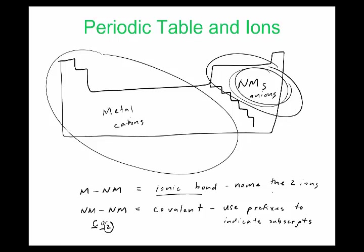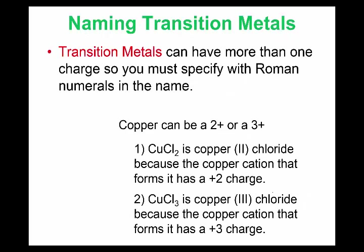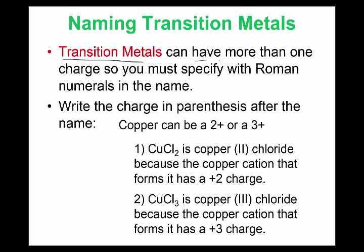The next slides cover ionic bonding, then acids, then covalent bonding at the end. Transition metals can have more than one charge, so you have to specify with Roman numerals in the name.